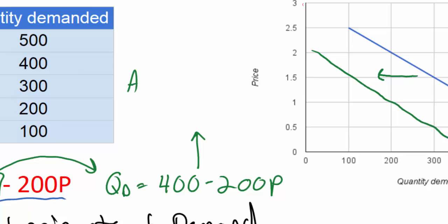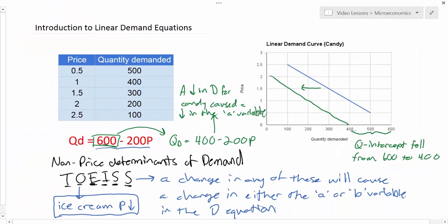A decrease in demand for candy caused a decrease in the A variable in our equation. The quantity intercept of demand decreased from its original level of 600 to its new level of 400. This is one way we can illustrate and explain how a change in demand will affect the demand equation.